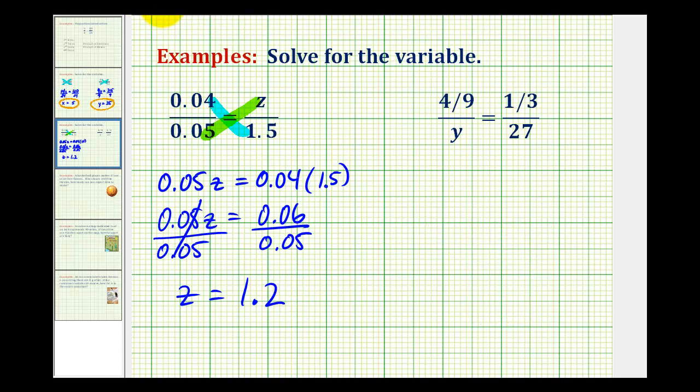Now let's take a look at our second example. Y times one third must equal four ninths times 27. So again, we have one third y is equal to four ninths times 27, but I'm going to write 27 over 1 since this is in fraction form.